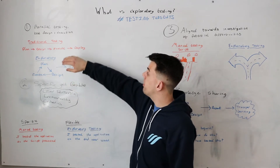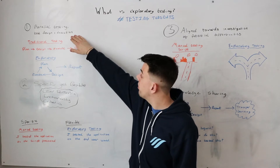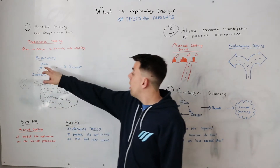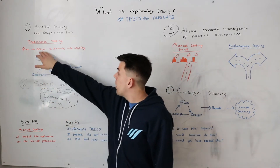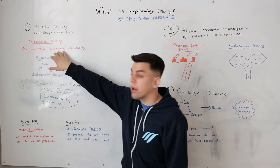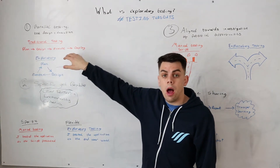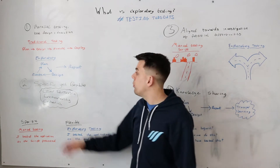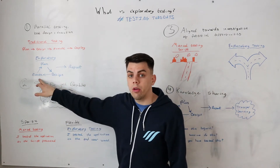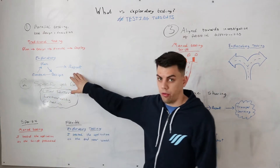The first principle is that you can run it in parallel with your test design and your test execution. In a very traditional testing approach you would do your planning, your designing, your executing and then deploy. However, with exploratory testing it allows you to do your planning, designing and executing all in one session, and then you can report on those findings.